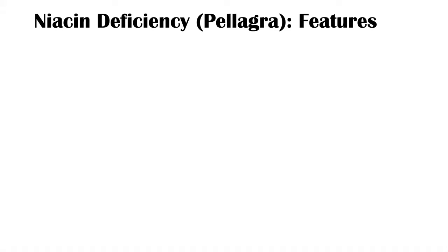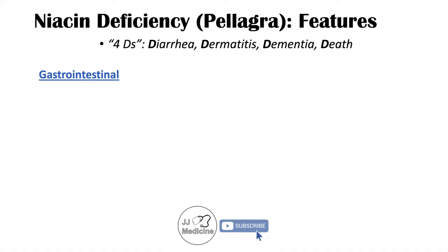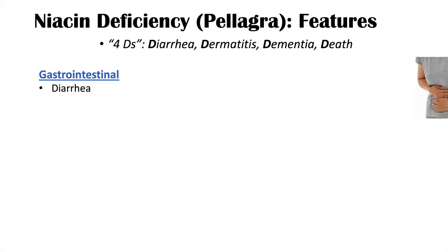Now let's talk about pellagra or niacin deficiency. Pellagra has a mnemonic to help remember its clinical features — the four Ds: diarrhea, dermatitis, dementia, and death. Starting with gastrointestinal findings — the first D — we see diarrhea, and also vomiting.